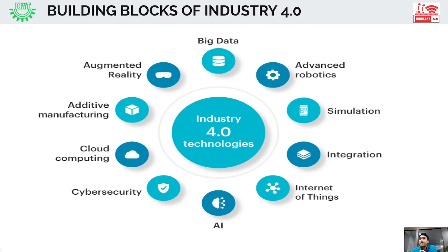Artificial intelligence and machine learning form one of the major building blocks of Industry 4.0. AI encompasses technologies that enable machines to perform tasks that typically require human intelligence. Machine learning is a subset of AI involving algorithms that allow systems to learn from data and improve performance over time. AI and machine learning play a vital role in Industry 4.0 by enabling automation, predictive analytics, and autonomous decision-making.